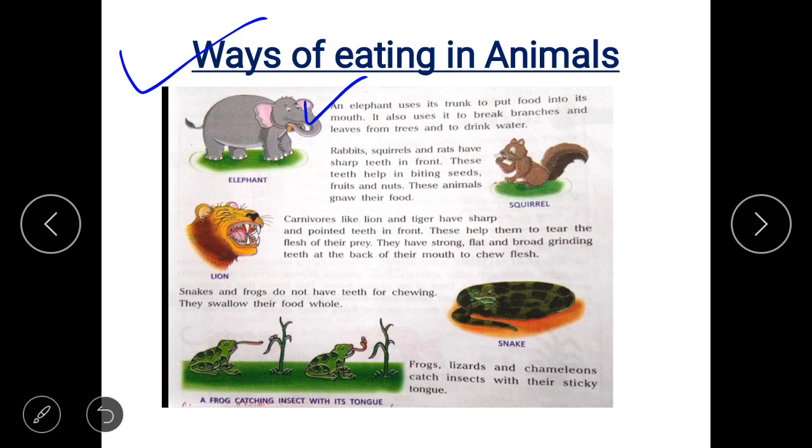There are some animals like rabbits, rats and squirrels which continuously keep on biting seeds, fruits, nuts, etc. This way of eating is called gnawing.